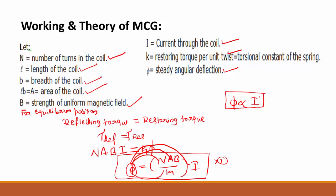The deflection produced is directly proportional to the current flowing through the galvanometer. It is a very sensitive instrument used to measure small currents of the order of microampere. It is called the moving coil galvanometer.